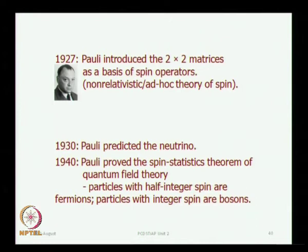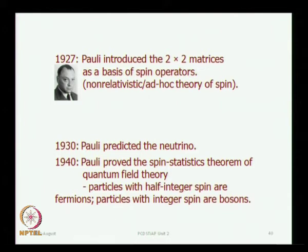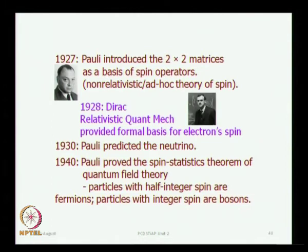That was Pauli's response to Kronig's suggestion, which came before Goudsmit and Uhlenbeck proposed it. Then later in 1927, Pauli introduced the 2×2 matrices we call Pauli spin matrices, connected with electron spin. Then in 1940 Pauli proved the spin-statistics theorem — that particles with half-integer spin are fermions and particles with integer spin are bosons. And in 1928 Dirac came up with the relativistic formulation of quantum mechanics, and electron spin comes neatly out of it.